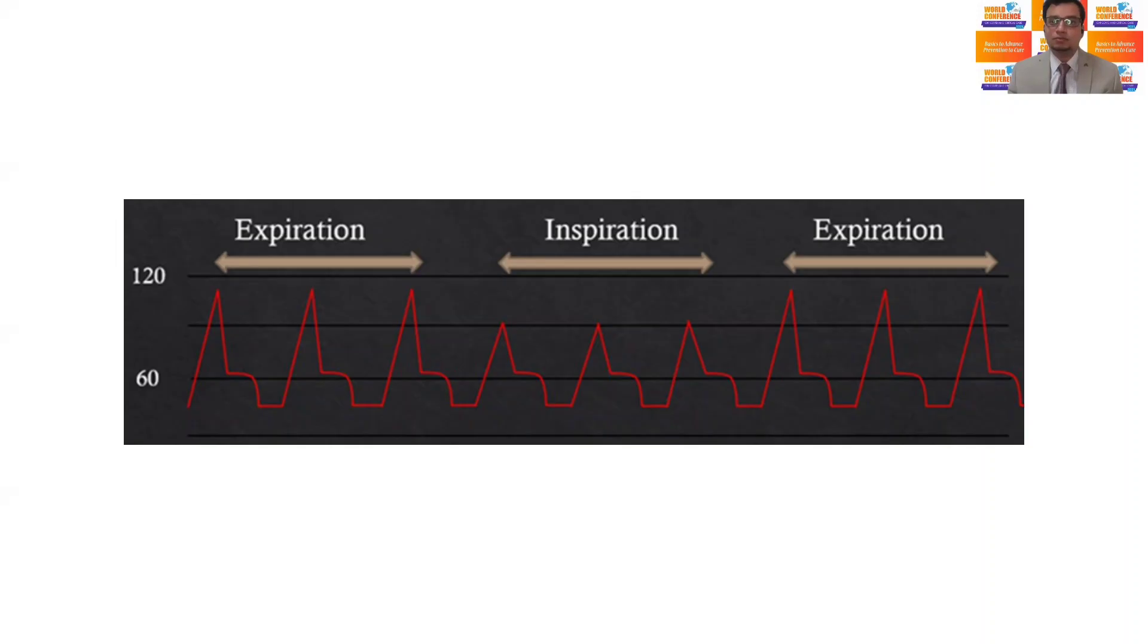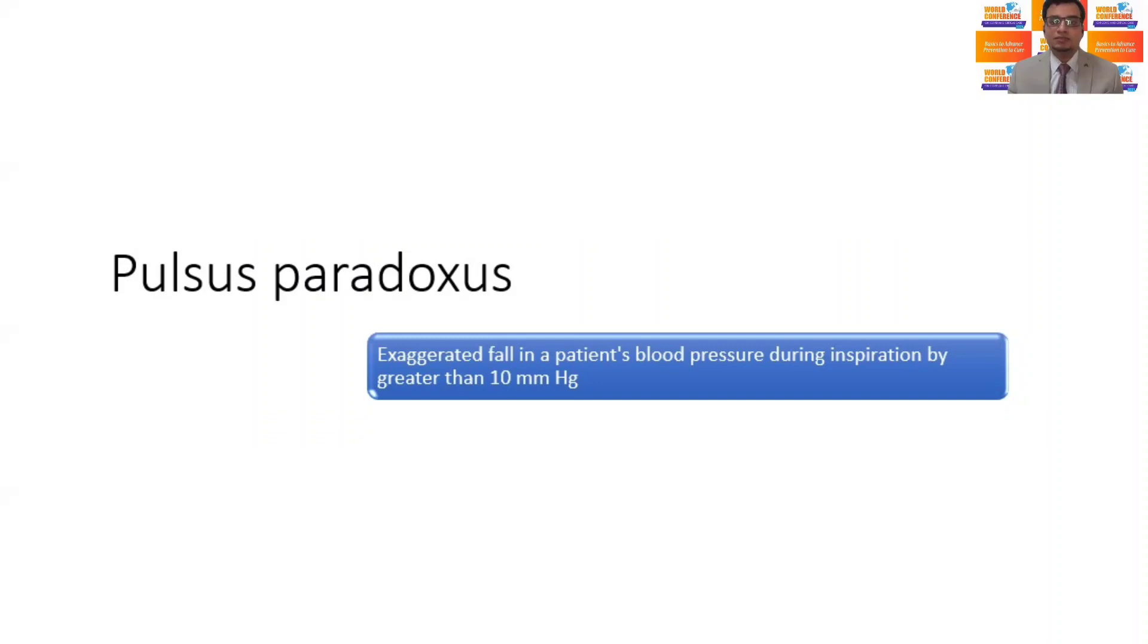In conditions where there is a large increase in the intrathoracic pressure, such as in case of status asthmaticus or in case of cardiac tamponade, where the filling of the heart is severely impaired, there is an exaggeration of normal inspiratory fall in systolic arterial pressure exceeding 10 mm of mercury. This situation is called pulsus paradoxus.